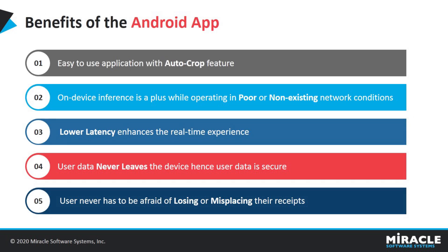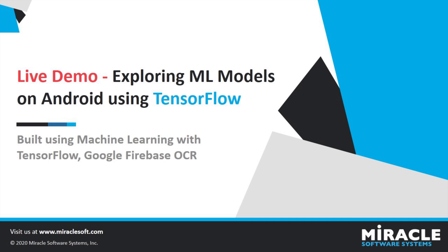The benefits of this Android app: the application is easy to use — once the user takes the picture of a receipt, the app takes care of cropping and feeding it to different models. The app has high availability even when in poor or non-existing network conditions due to its on-device inference. Since all the models are on the device, there is no communication cost with the server nor any latency issue. The data is handled exclusively on the device, hence it is secure. The receipts can be scanned and stored quickly for managing expenses before losing or misplacing them.